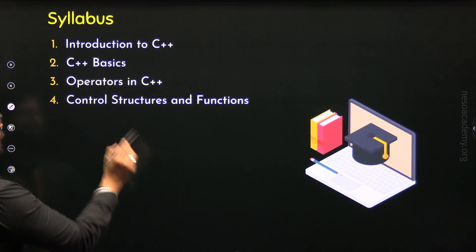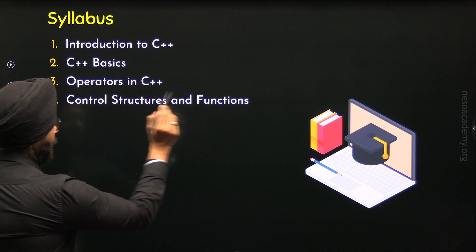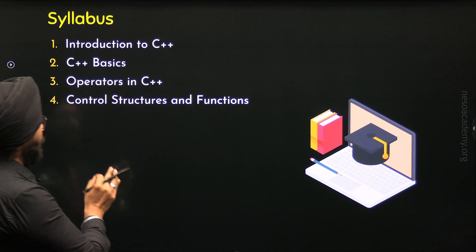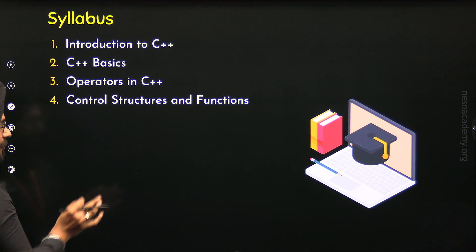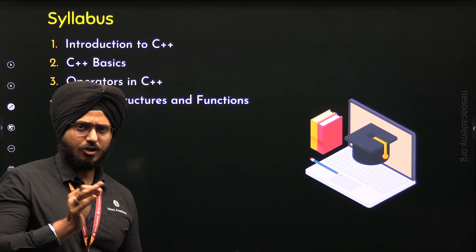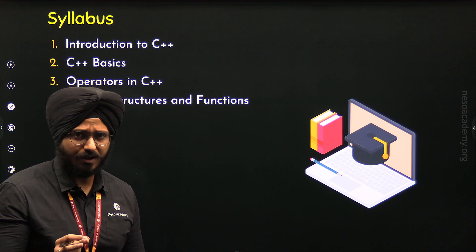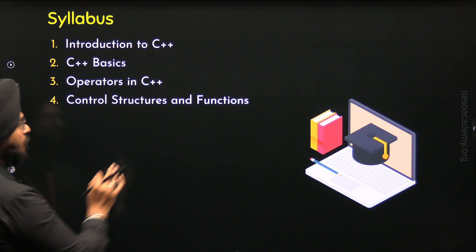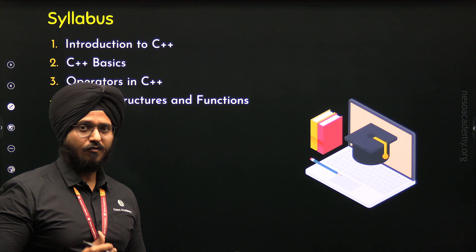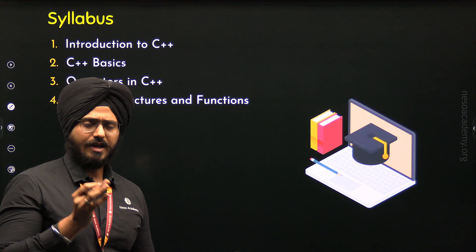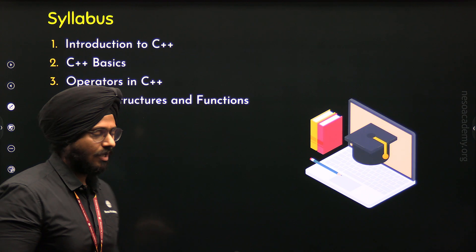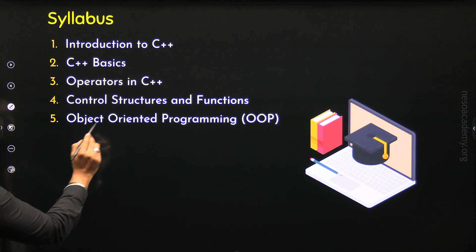Chapter 4 is about control structures and functions. Control structures are broadly classified into conditionals and loops. Under conditionals we will cover if-else, nested if-else, and switch. Under loops we will cover for, while, and do-while. After these topics, we will move to functions — understanding the basics of functions, then more advanced topics like call-by-value and call-by-reference, function overloading, and recursive functions.